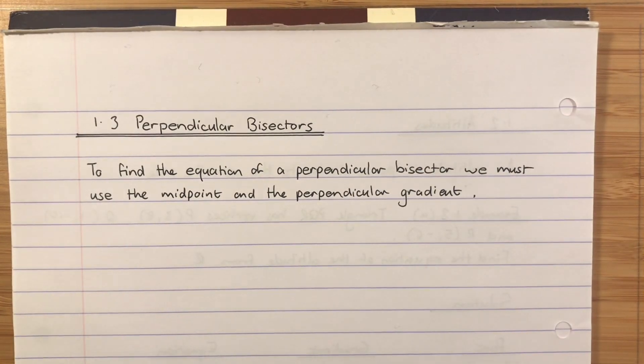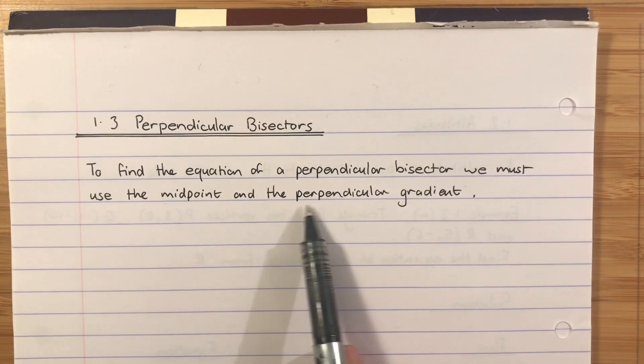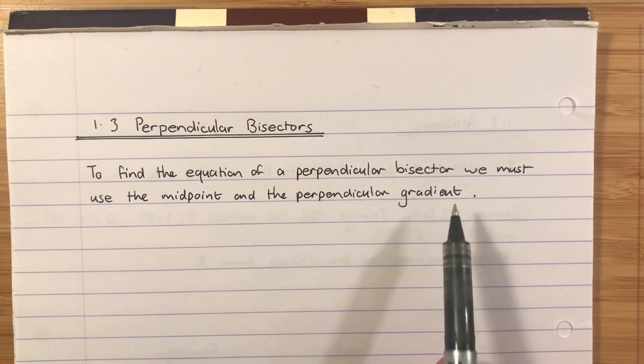So thinking back to medians, when you find the equation of a median, you have to use the midpoint. When you find the equation of an altitude, you have to find the perpendicular gradient. When you are doing a perpendicular bisector, you have to do both. So both of those subskills are used here.